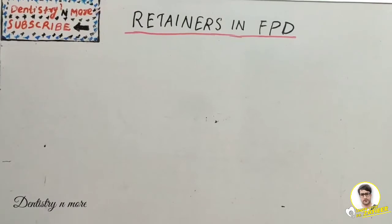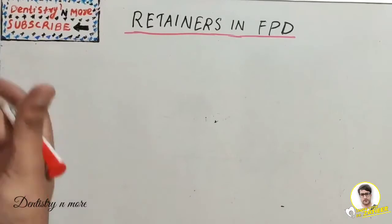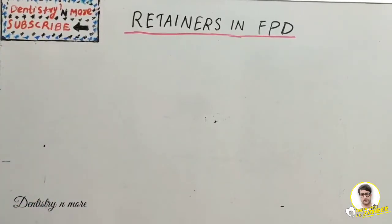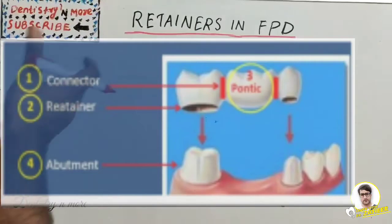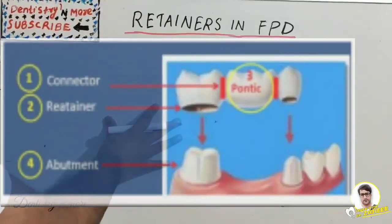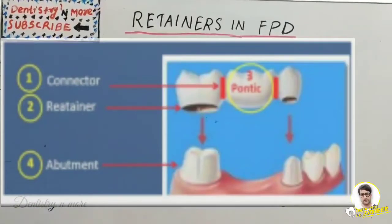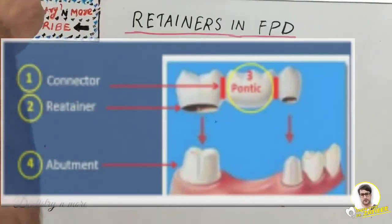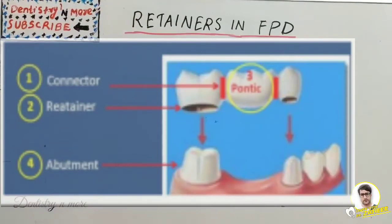Welcome back to another session in Dentistry MO. We are continuing our topics in fixed partial denture. We finished pontics, abutments, and bonding design. Today we have retainers in fixed partial denture. A retainer is a component of an FPD which takes support from an abutment tooth and provides retention. The four components of an FPD are the abutment, connector, retainer, and pontic.